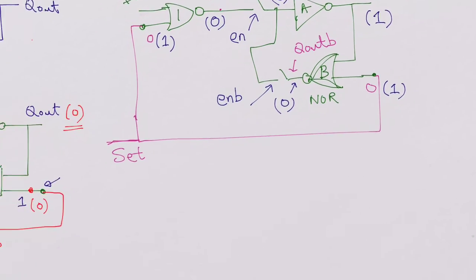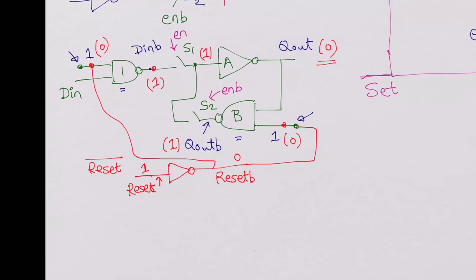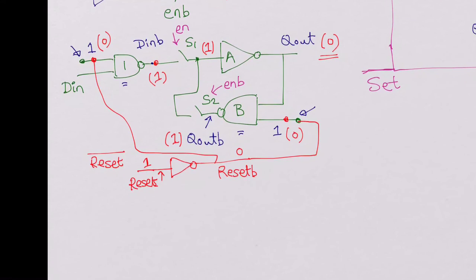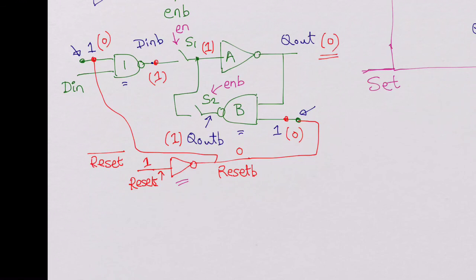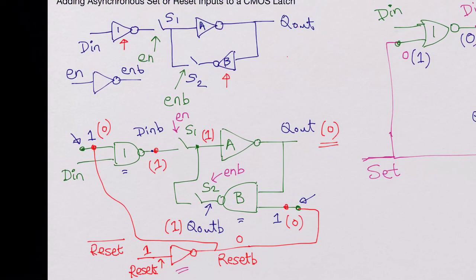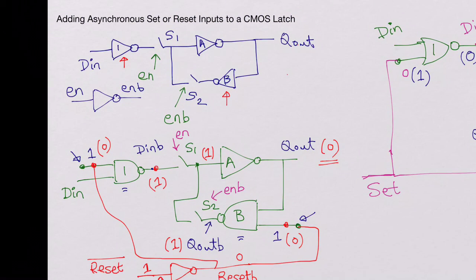So this is how you add a set input for the latch: by making the two inverters into NOR gates. And to add a reset input, you make the two inverters 1 and B into NAND gates, giving a reset bar input, and then add an inverter to get the reset signal. Here we looked at how to transform the CMOS latch to add asynchronous set or reset inputs.